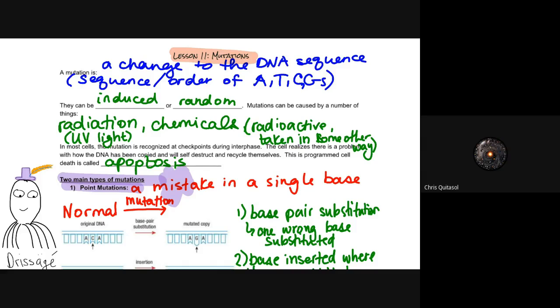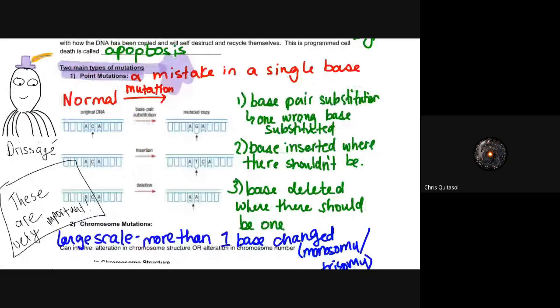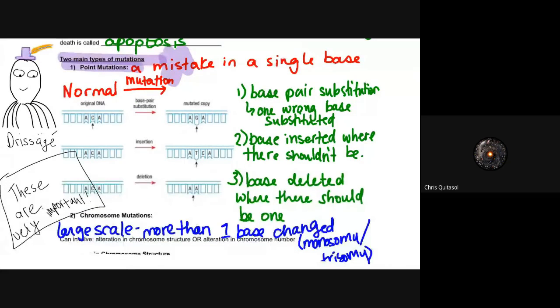The most important component here are the two types of mutations. The first mutation we're going to look at is point mutation. This is the most important thing because we talk a lot about it in this lesson as well as in the unit to come. A point mutation is a mistake in a single base. If you take a look at the original DNA here where that base pair coding of ACA exists, a mutated copy has that mutation in that G. A single base pair substitution, this one is called, where one wrong base is substituted for another. In this case, the C was substituted for a G.